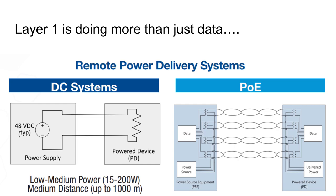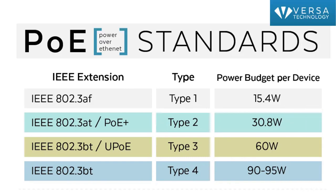And layer one is doing more than just data. Power over Ethernet. Today we're delivering significant amount of electrical power DC over our cables. The new power over Ethernet standards are pushing power values to some device up to 95 watts.